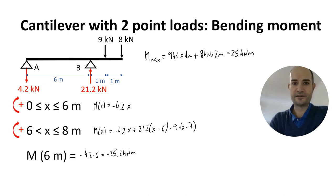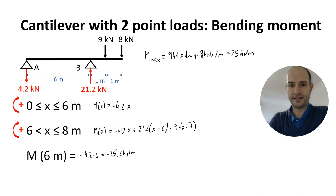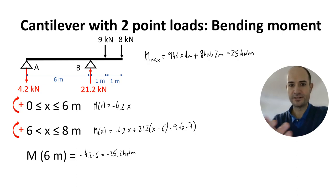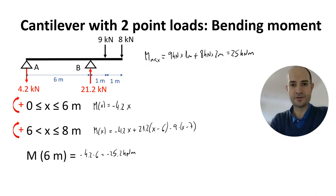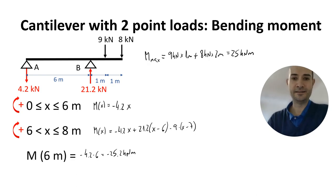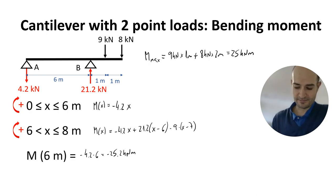Why don't we get the same result as above — why the difference between 25 and 25.2? It's just a matter of rounding the numbers for the reactions; we have put only one decimal. In reality it's 21.17 and minus 4.17. The more decimals you consider, obviously the closer the result, but it doesn't make any real difference — 25.2 or 25 is just 0.2 kN·m, or about 20 kilograms per meter.